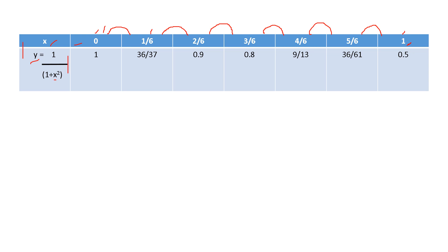Substitute in the question, that is 1 by 1 plus x square. Substitute 0, find the value of y, 1 by 6 and find the value of the second case. 2 by 6, that is 0.9, 3 by 6, 0.8, 4 by 6, 9 by 13, 5 by 6, 36 by 61 and 1, that is 1 and you get 0.5.